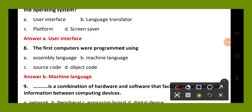Question number 8. The first computers were programmed using: option A, assembly language; option B, machine language; option C, source code; option D, object code. The right answer is option B, machine language. The first computers were programmed using machine language.